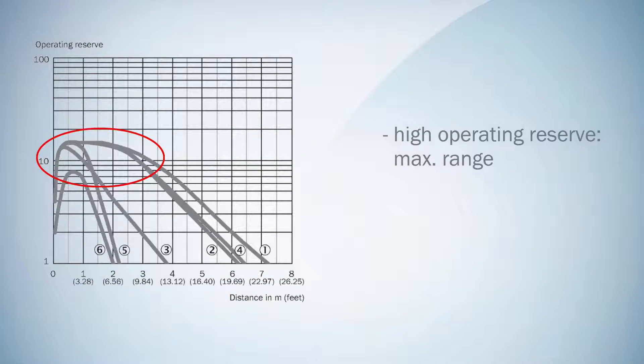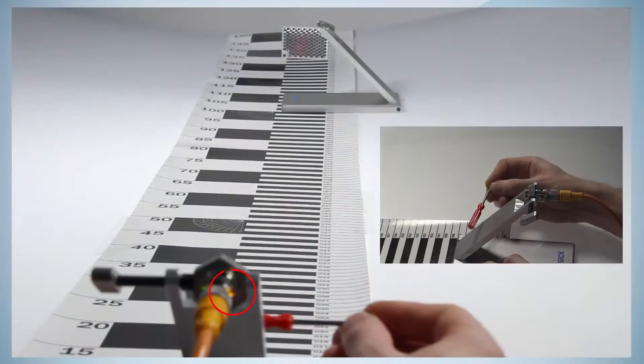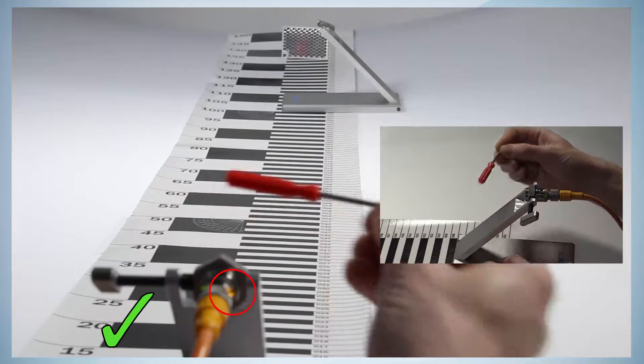If high operating reserve is required, go to the maximum range with the potentiometer. If for example small objects need to be detected, adjust the sensor using the potentiometer until the sensor is sensitive enough that it can detect the small object. But watch out,